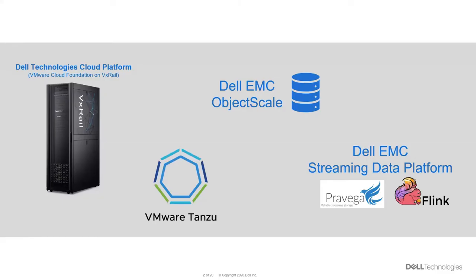This demo solution is made up of four key technologies. Dell Technologies Cloud Platform, DTCP, delivers a turnkey experience that's easy to deploy and manage due to the tight integration between VMware Cloud Foundation and VxRail. With DTCP, organizations can now develop, test, and run cloud-native applications alongside virtualized applications in a single platform.